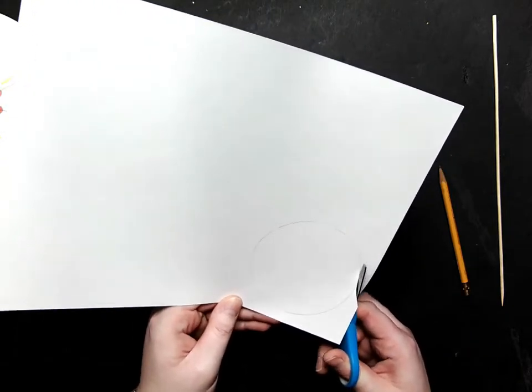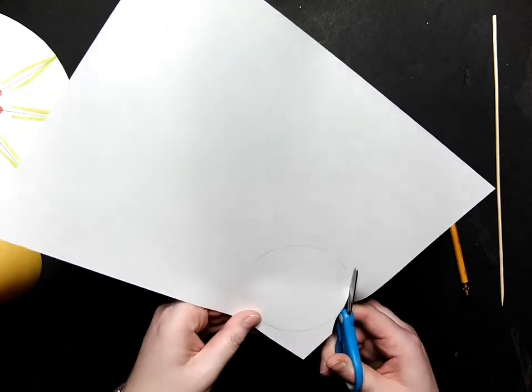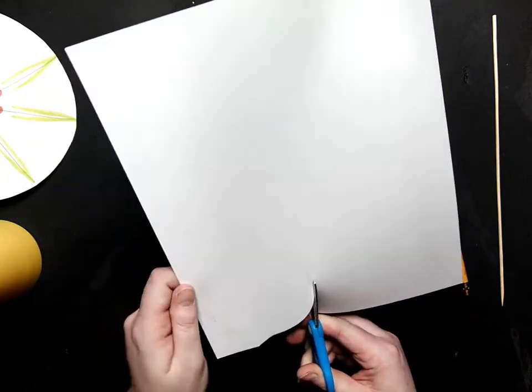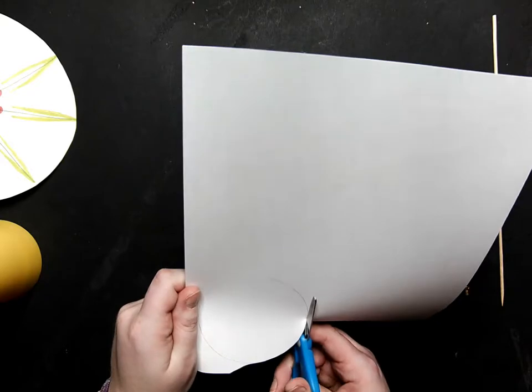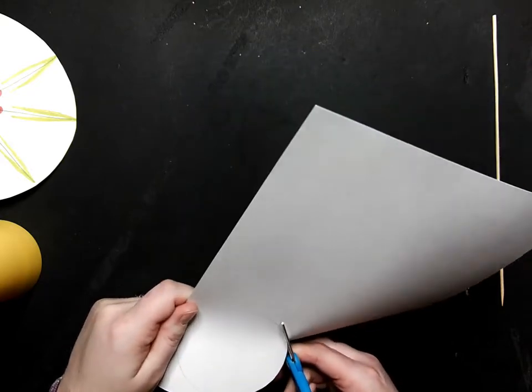And then we will go ahead and cut that out. Now if you're feeling adventurous, you can cut two circles in the same size, and I'll show you why once we are done cutting this one out.